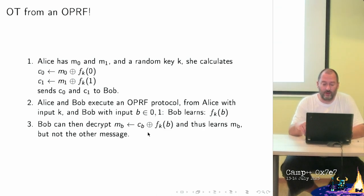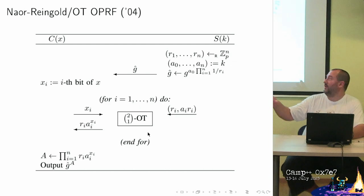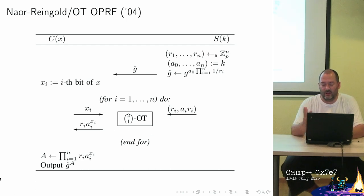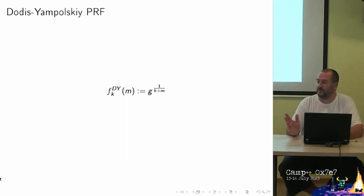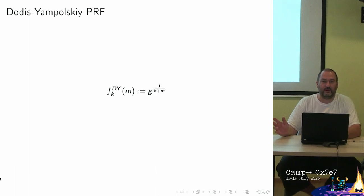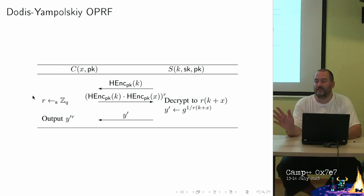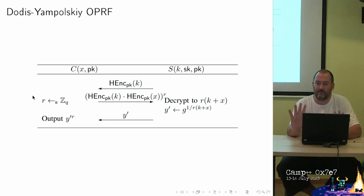The Naor-Reingold PRF has a large key array and uses oblivious transfer — computing products in the exponent. Dodis-Yampolskiy looks much simpler: it's basically just exponentiation of the inverse of (K + M), combined with homomorphic encryption of those two values and then decryption to get the output. Neither of these are very widely used in this exact form, though Dodis-Yampolskiy is used quite widely on the internet in a different form.